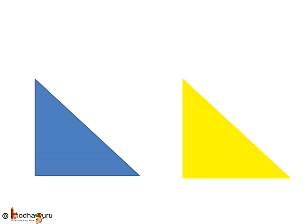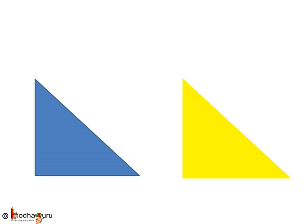If we put this blue triangle over this yellow triangle then they will coincide. Means they are same in all aspects. So these two triangles have the same area, same perimeter, same angles, same side lengths etc.